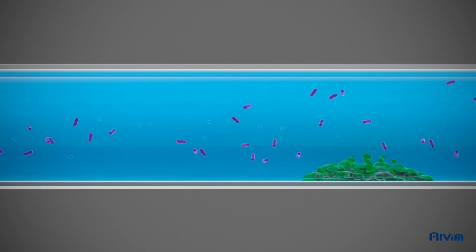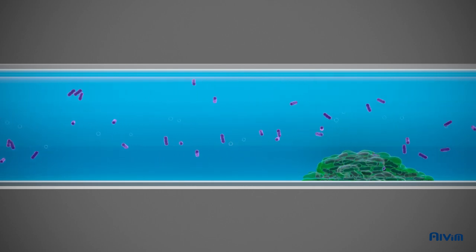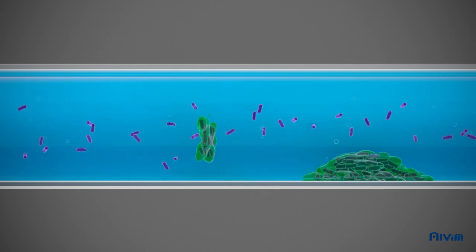When biofilm is mature, parts of it can detach, cross-contaminating other points of the piping system.